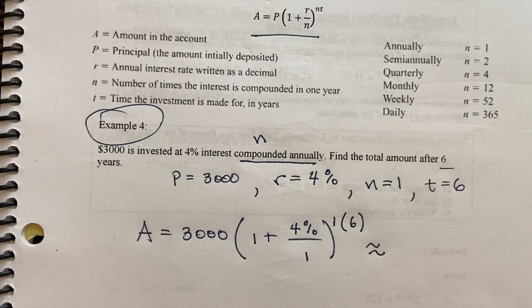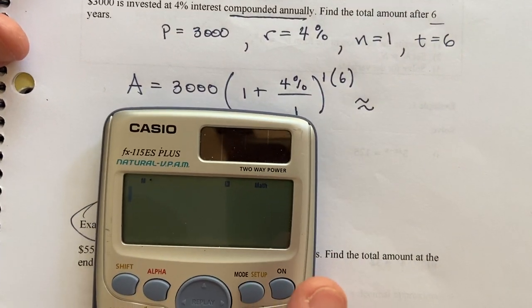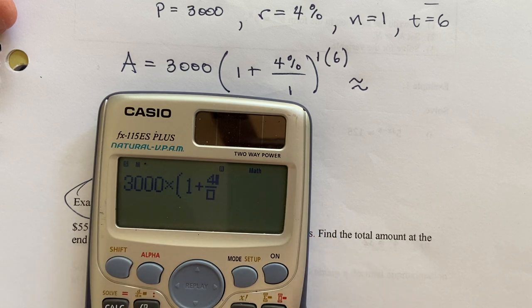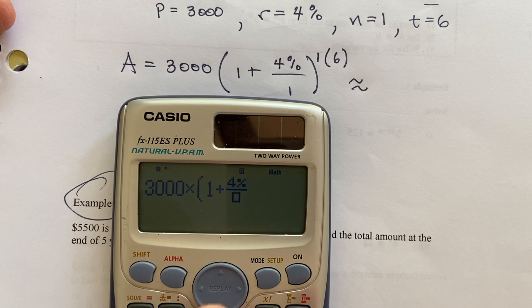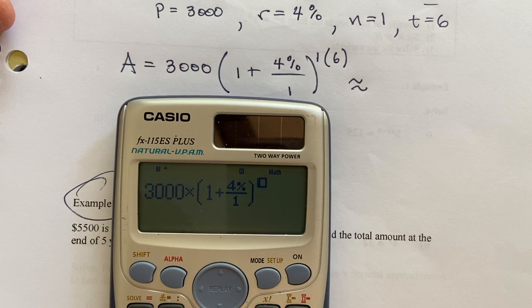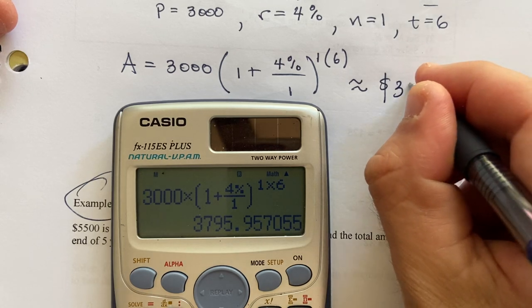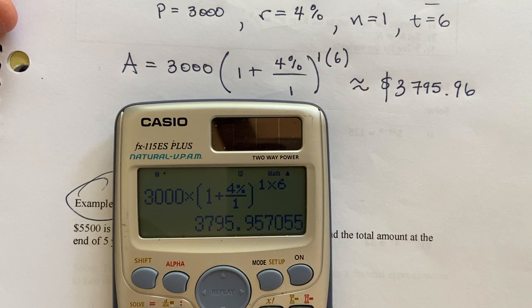I'll round this to the nearest penny. Let me show you how the calculator stuff works because that's a part of this. So 3,000 times parentheses. Type 1 plus fraction, 4, and make sure to use percent. For this calculator percent is behind the left parentheses so shift left parentheses. Scroll down, type a 1, scroll right, end your parentheses, then raise to 1 times 6. So this would be about $3,795.96.